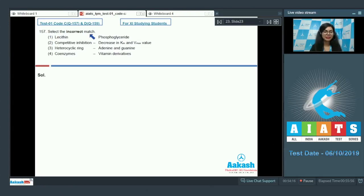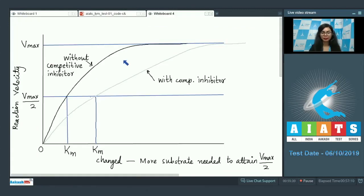Question number 157, select the incorrect match. Lecithin is a phosphoglyceride or a phospholipid, that's correct. Option two, competitive inhibition, decrease in Km and Vmax value. Looking at the graph obtained when we use a competitive inhibitor, this dark line represents the reaction progress when it is without a competitive inhibitor.